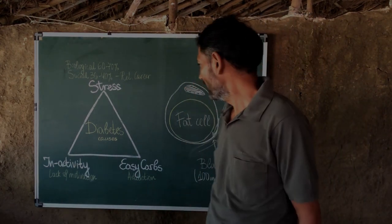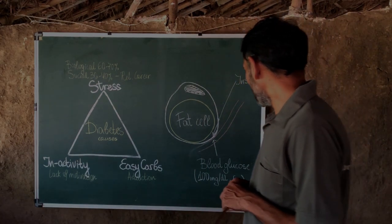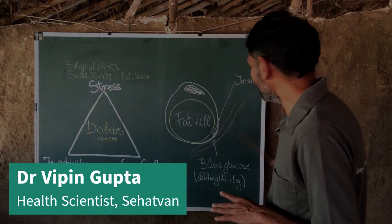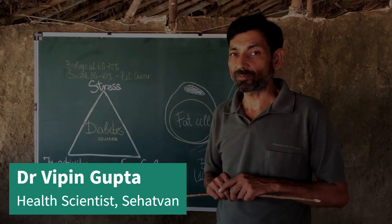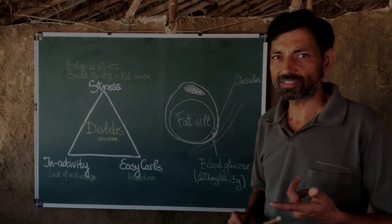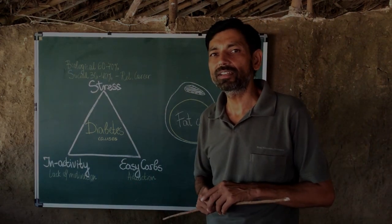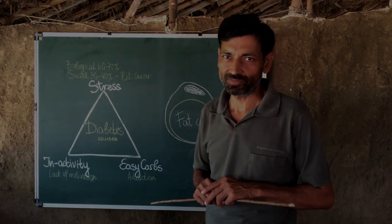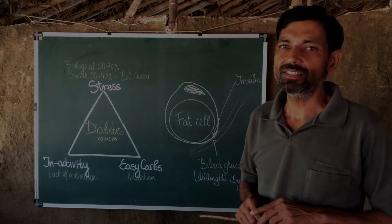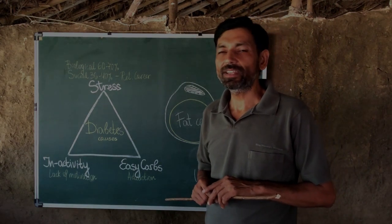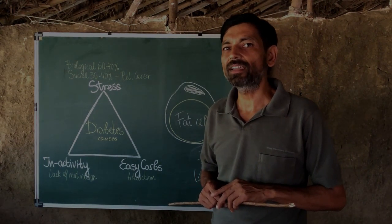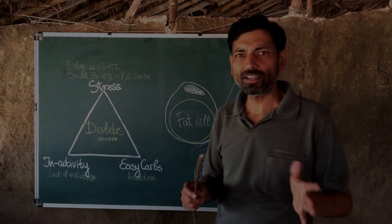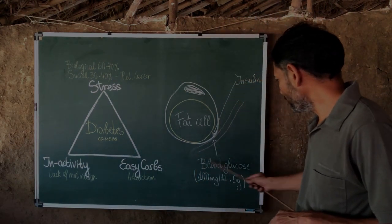I'm talking about type 2 diabetes only, not type 1. When we eat anything which contains carbohydrate — things like wheat, potato, rice, pulses, and many other things — on digestion that carbohydrate gets converted into glucose. Glucose is a very important energy fuel for the body, but it is also very reactive, so the body keeps very tight control over it. The fasting limit for glucose is set around 100 milligrams per 100 ml.